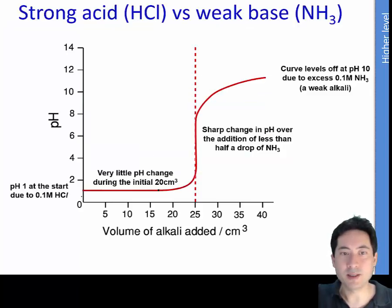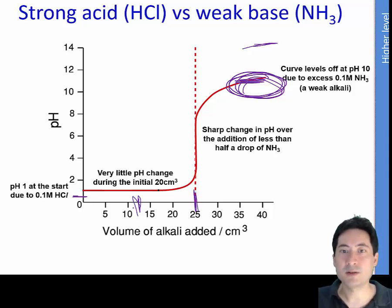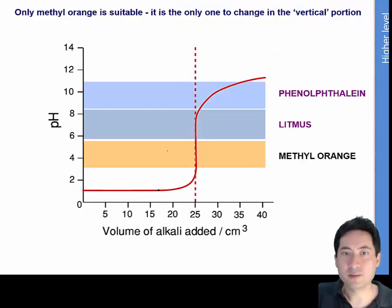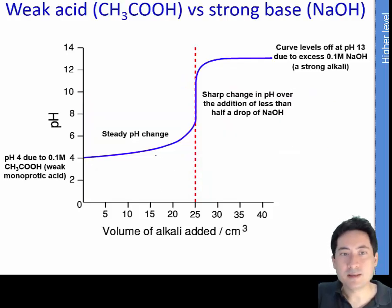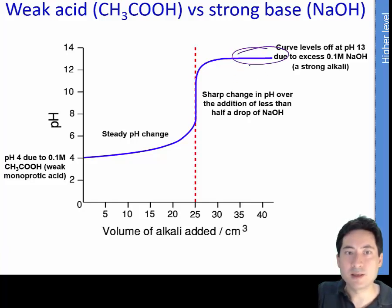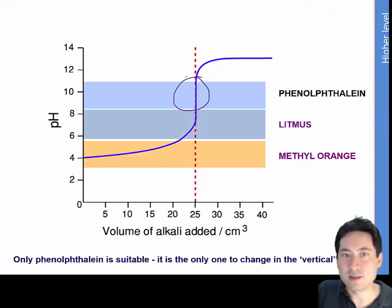For a strong acid and weak base: it starts at a low pH but finishes at a much lower pH because of the weak base. Methyl orange is the only appropriate indicator — phenolphthalein would be very difficult to use here for detecting the colour change. For a weak acid and strong base: it starts at a slightly higher pH than a strong acid would, and finishes at quite a high pH. The only correct indicator would be phenolphthalein, as it's the only one whose end point falls within the rapid pH change region.